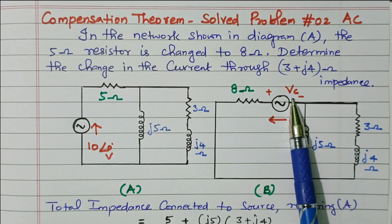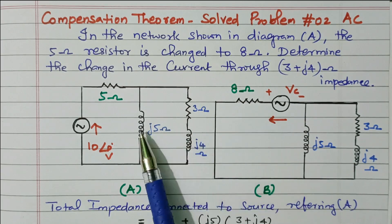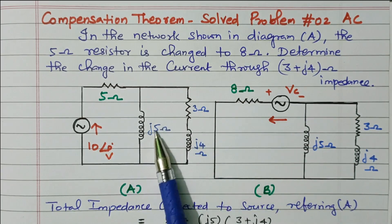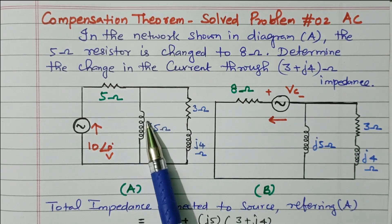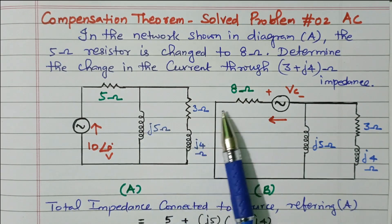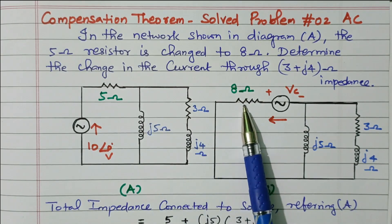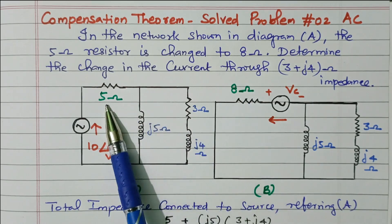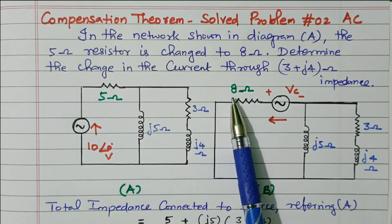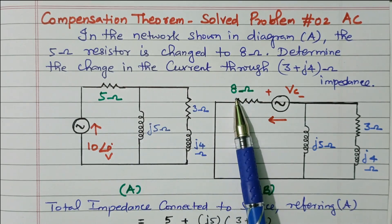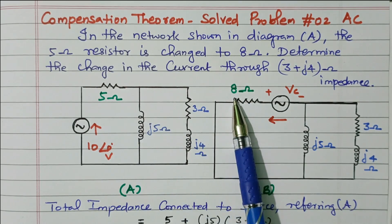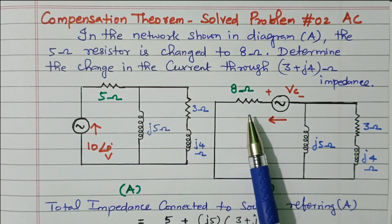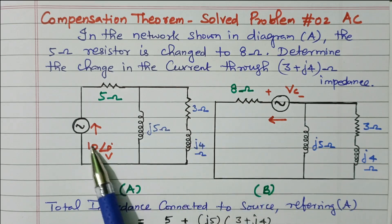How to find this compensation voltage? V equals I into R, where I is the current flowing in the original circuit and R is delta R, the change in resistor. The 5 ohm changed to 8 ohm, so 8 minus 5 equals 3 ohm — the change in resistor is 3 ohm.